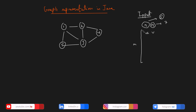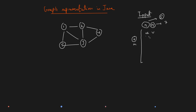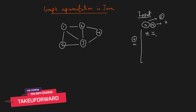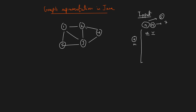After that, they will tell you that M lines will follow — that is, 7 lines — and every line will have a U and a V, meaning there is an edge between U and V. For example, there is an edge between 1 and 2, then between 2 and 3, then between 2 and 4. If it says 1 and 2, you have to assume there is also an edge between 2 and 1 in an undirected graph. In case of a weighted graph, a third parameter with the weight would also be given, but we will discuss that later.